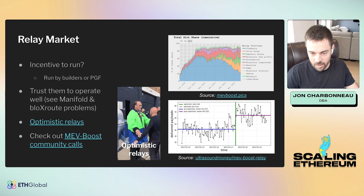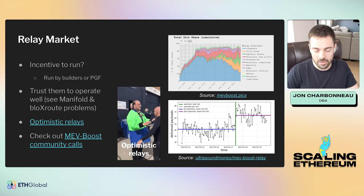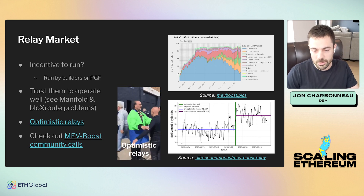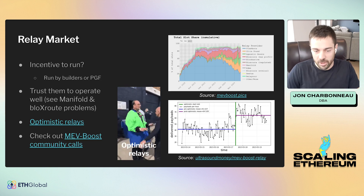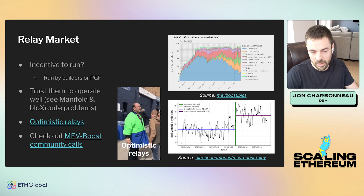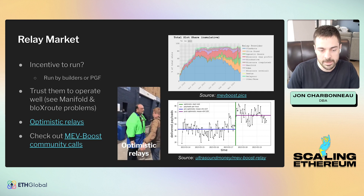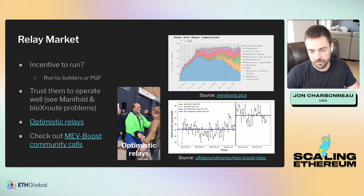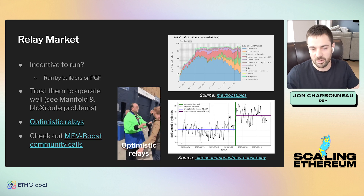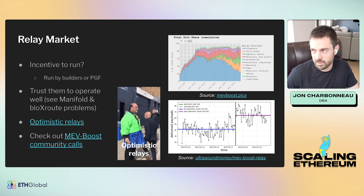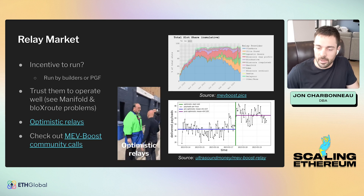Ultrasound relay launched very recently — about a week ago — with optimistic relays, which is a new concept where you realize there's a meaningful latency advantage if you cut out the step of requiring relays to actually validate the block they are sending to proposers. That cuts off around 100 to 200 milliseconds of latency. It does come with some risks because they are no longer fully checking the blocks builders send, but builders are collateralized. Builders who want that extra latency edge put up collateral, and if their payment doesn't go through, the collateral can be taken and they'd get kicked off that relay.